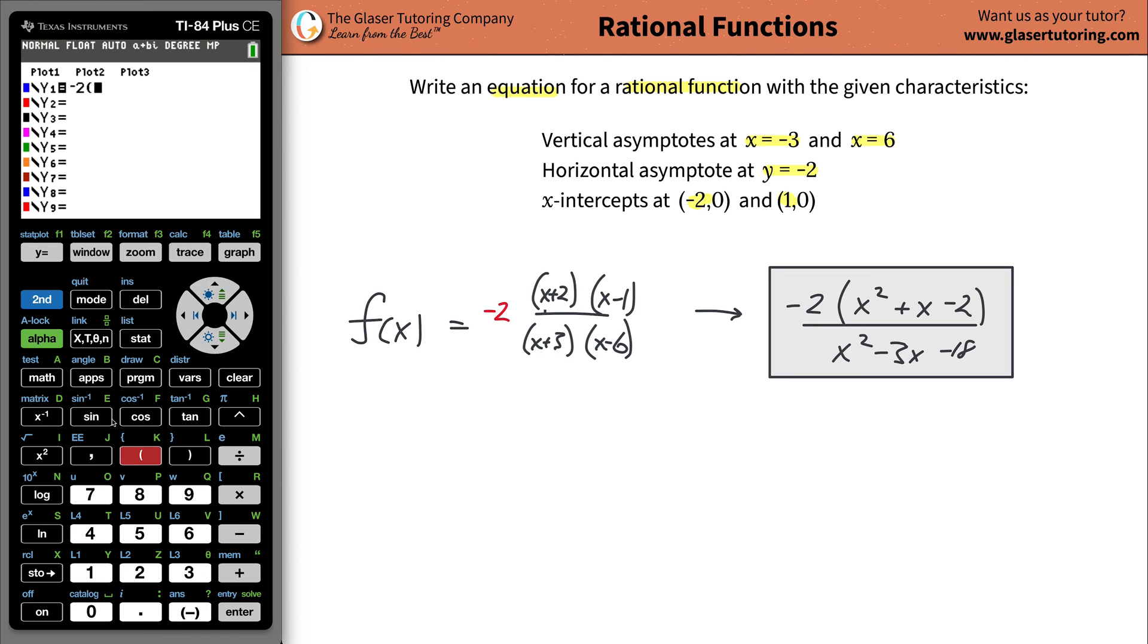All being divided then by x squared minus 3x minus 18, and graph it.